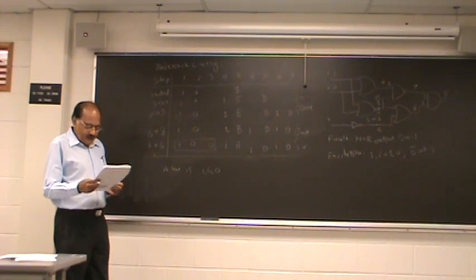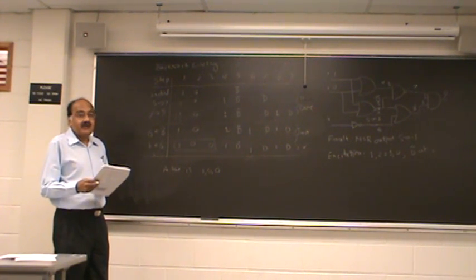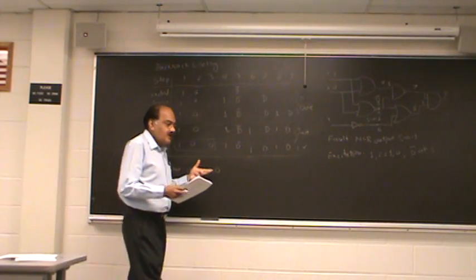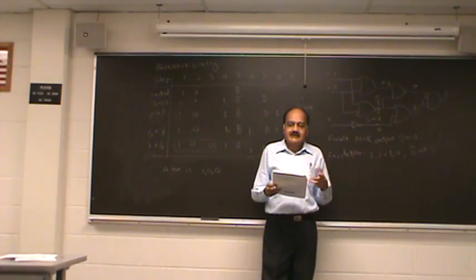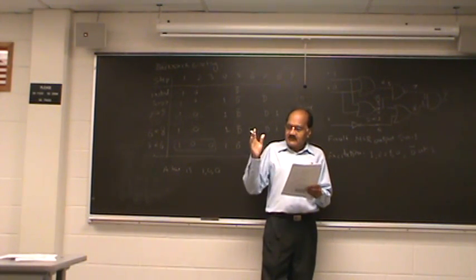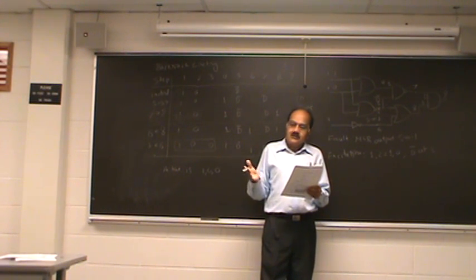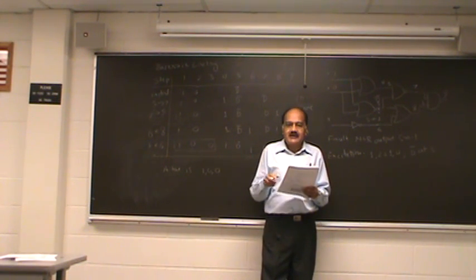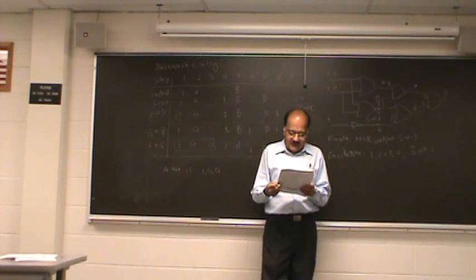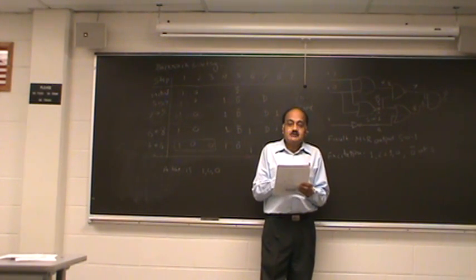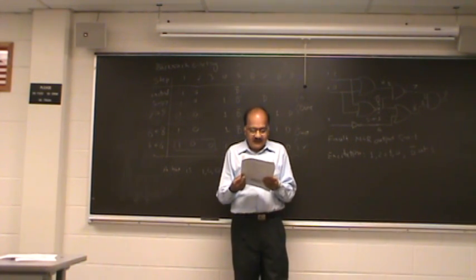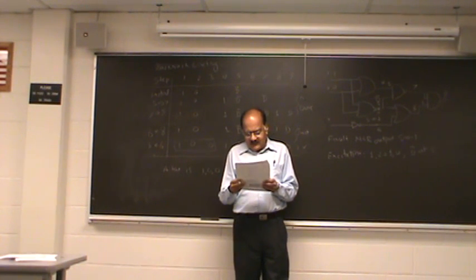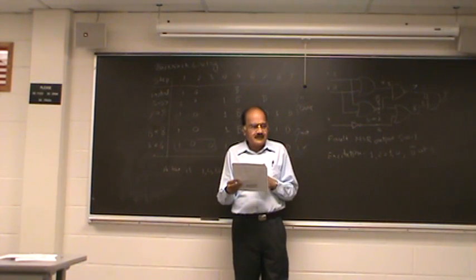And notice D algorithm goes around the problem of multiple paths by explicitly considering multiple paths. So if single paths don't work, then go ahead and try multiple paths. You keep on trying until you find a test. Notice that the algorithm is sort of like a search. You keep searching and searching until you find a test.